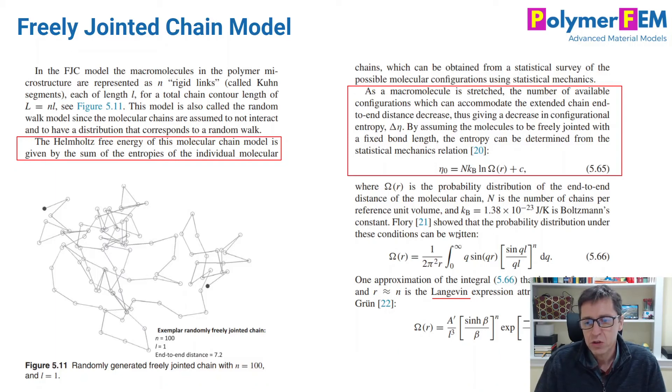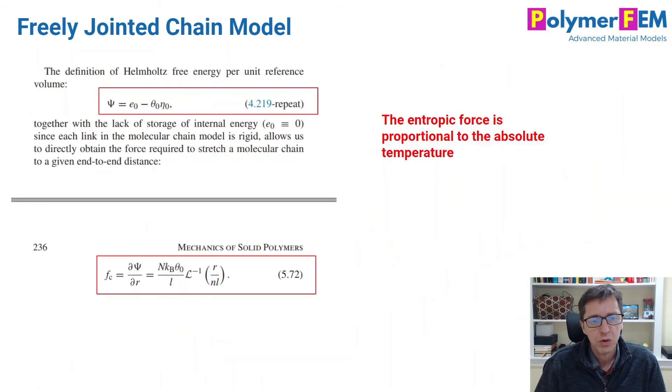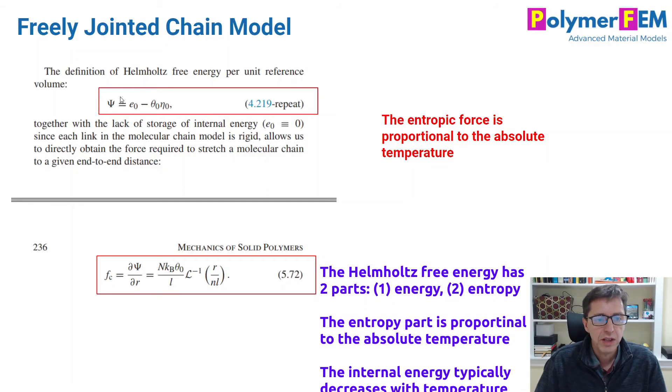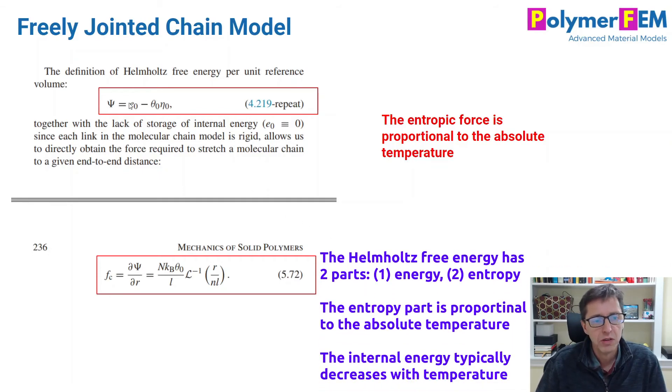And you can show, and that was done by Flory some time ago, that this is the main equation that drives the probability space. And it turns out you can simplify this equation and come up with basically a very precise equation for the Helmholtz free energy for that configuration. And one can show that the free energy has two parts. One has the energy part and one is the entropy part, as shown here. And the entropy is determined by the configurational space of the molecules.